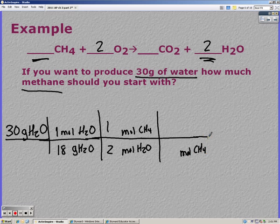Finally, I'm going to convert it to grams. So one mole of methane equals 16 grams. Multiply and divide and you should get 13.3 grams.